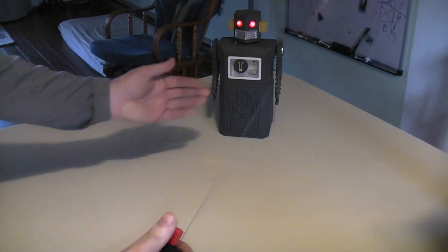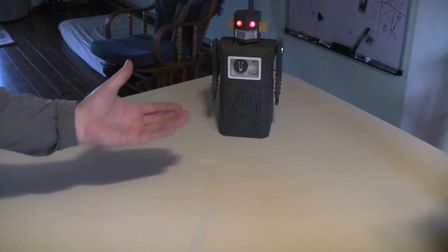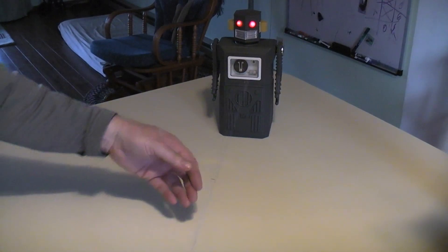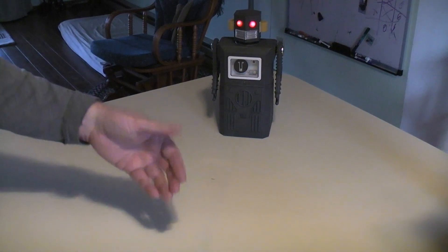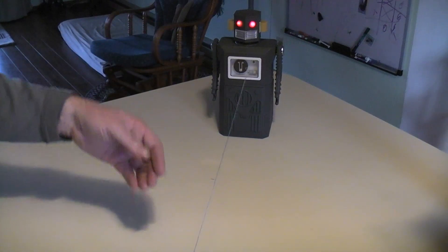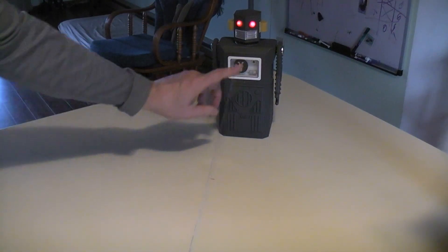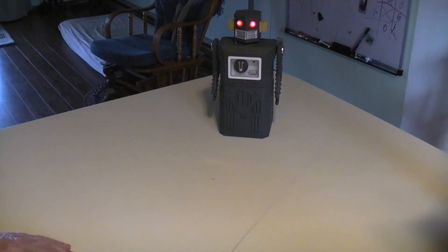So every time I give it a pulse it should sequence to the next one. In other words, go forward should be the first and then it's going to turn in one direction. Then it should go forward in that new direction. Then it should turn the other direction. Then it should go forward in that new direction and then it should stop. So every time it's receiving something, the little green light should light up in the chest.